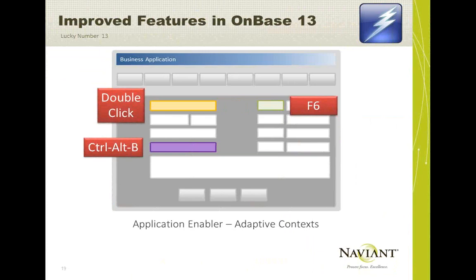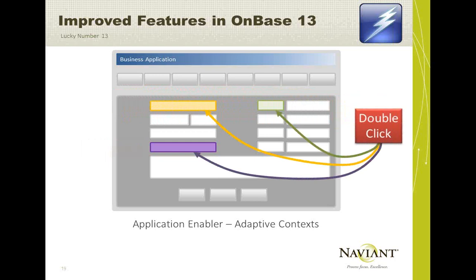The next new feature that everyone will get behind is Adaptive Context in Application Enabler. Beyond supporting 64-bit apps, this is probably the other biggest feature App Enabler adds. In the past, if you had multiple hotspots in an enabled application, each one required a different key combo — double-click for one, F6 for another, and eventually you'd run out of function keys and start using Control-Alt-Shift-V type combinations that users had to memorize. Now with Adaptive Context, you can make all of them a double-click or all F6. Users just have to remember where on the screen to double-click. It's way easier for end users to use an enabled application.